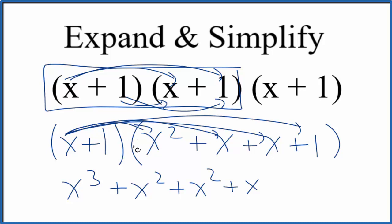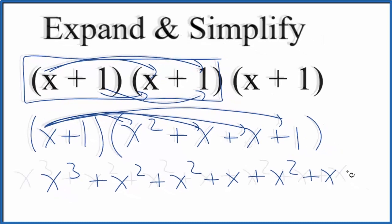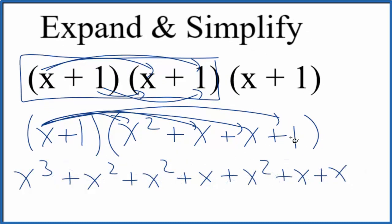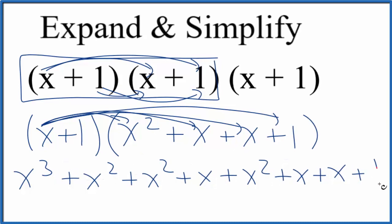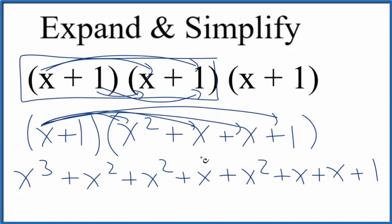Now we can do the 1. Well, 1 times each of these terms, that just gives us the same thing here. So let's just do 1 times x squared, plus 1 times x, plus 1 times x. And then finally we have the 1 times the 1, so that's just 1.